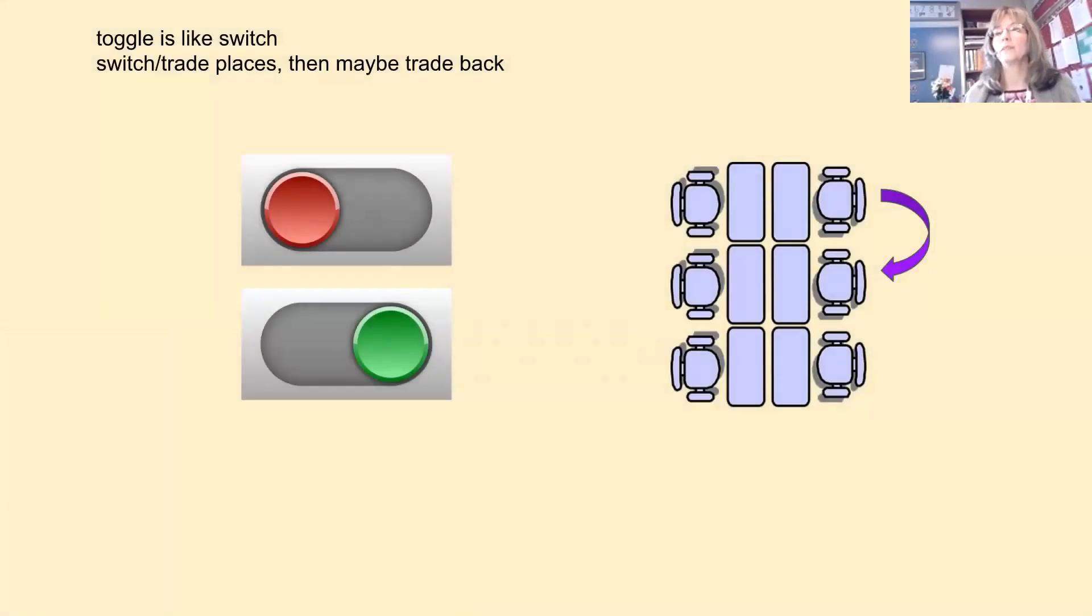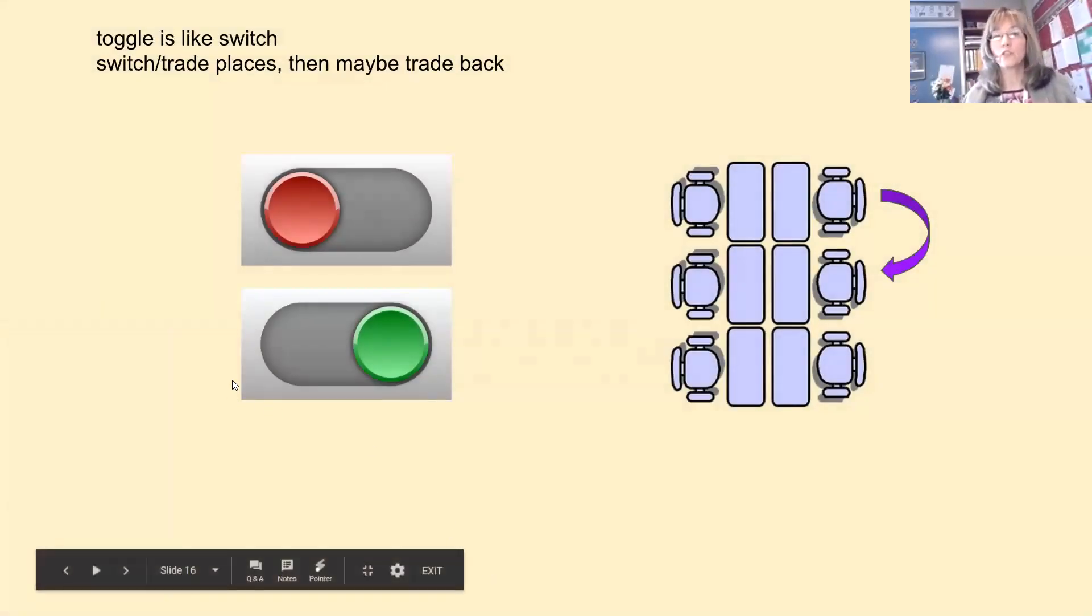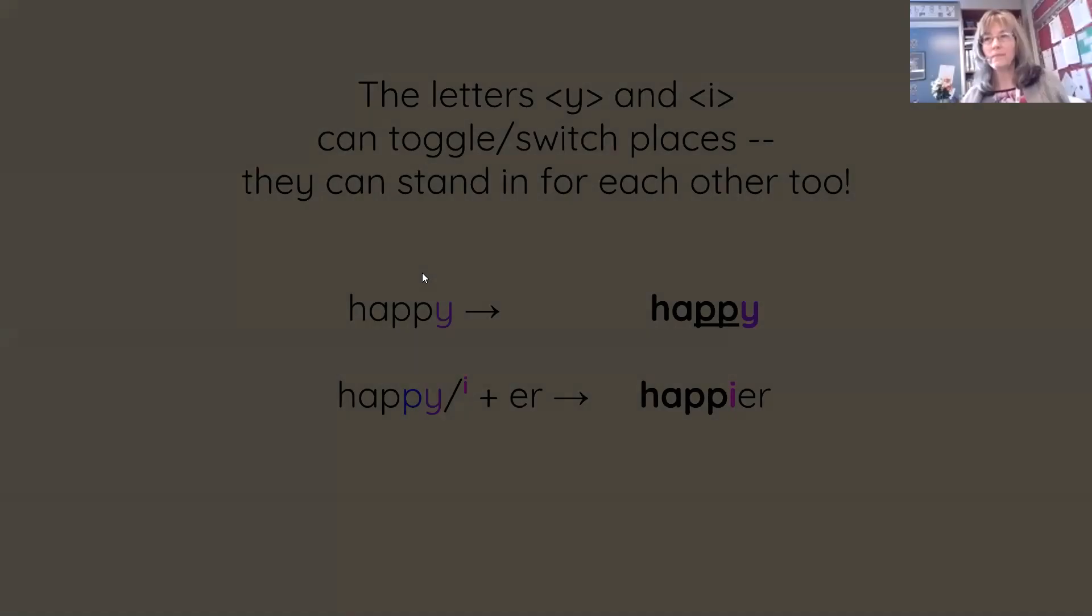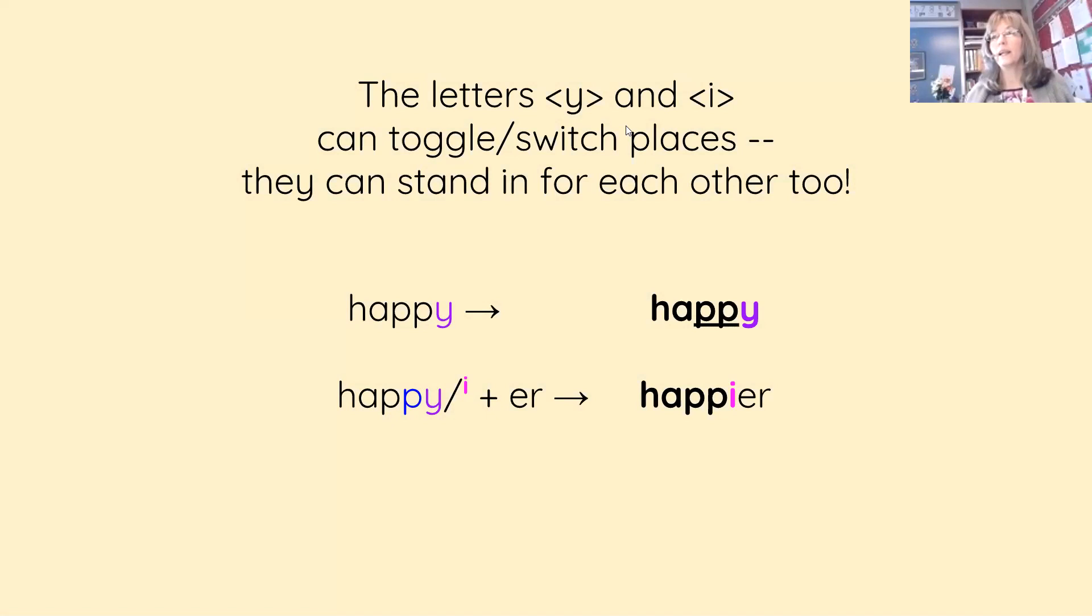First, we need to talk about what toggle means, or to switch. You can switch places with someone, and you might switch back. You might turn a switch off or on. So you toggle it, you trade places with it, and you might trade back. Same with your seats. You might trade seats with someone, and you might trade back. Toggling is the idea that you can switch places. The letters Y and I can also toggle or switch places. They can stand in for each other.